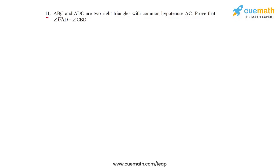Question 11 states that ABC and ADC are two right triangles with common hypotenuse AC. We need to prove that angle CAD is equal to angle CBD.